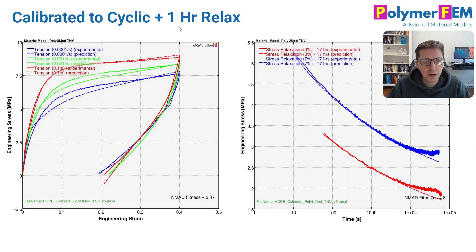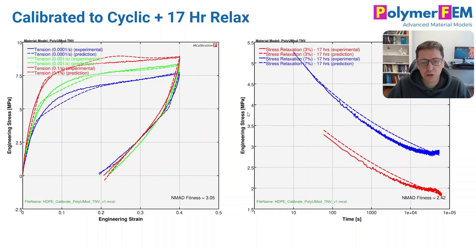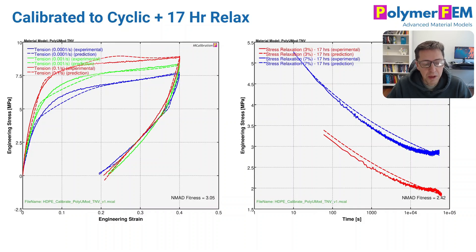What if we use the first hour of the relaxation data? The cyclic tension data has an error of about 3.4-3.5%, slightly worse than before, but we get a really good prediction of the stress relaxation response using just one hour of relaxation data. And if I use all the data at once — all cyclic data and all 17 hours of stress relaxation — using MCalibration's automatic solver running for about an hour, the overall fit is excellent: cyclic tension at 3% error and relaxation at 2% error.